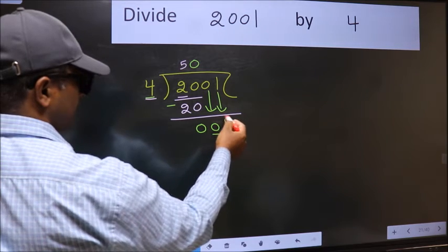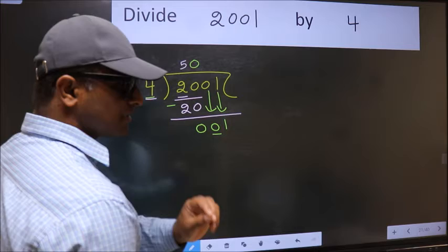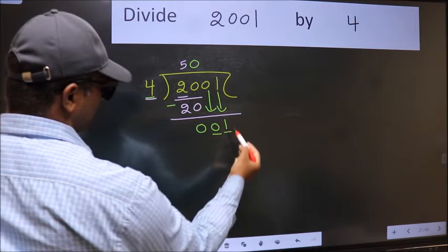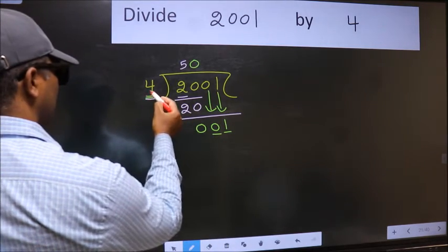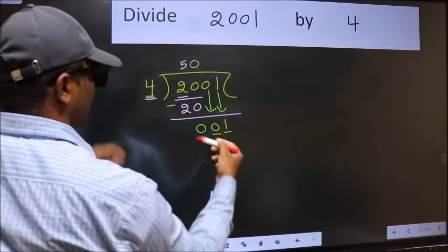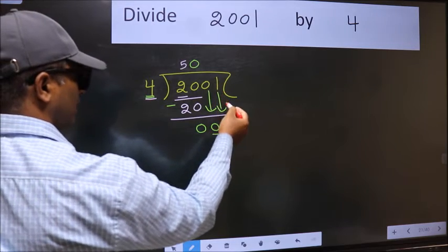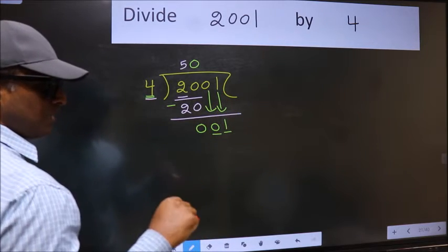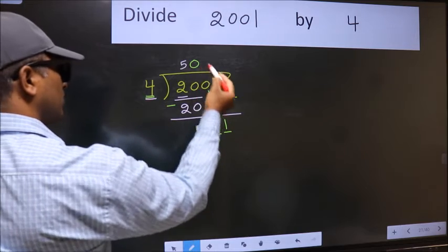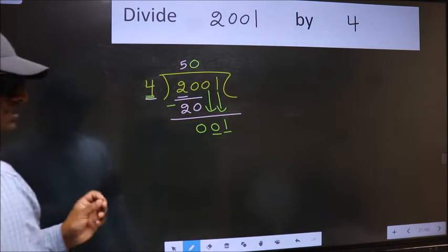After this step, the mistake happens. And the mistake is this: here we have 1 and here 4. 1 is smaller than 4, and we don't have any more numbers to bring down. So what many do is they directly put dot, take 0, which is wrong.